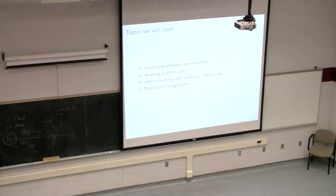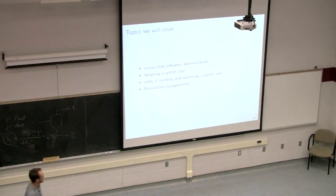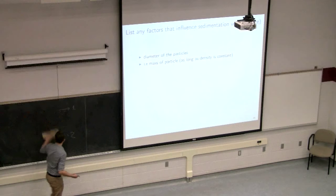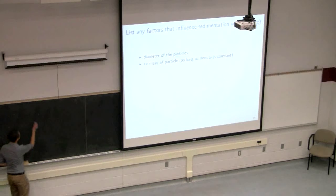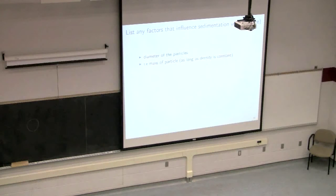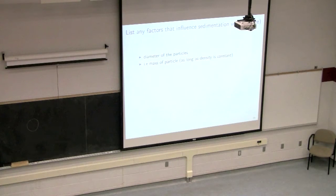In today's class we'll look at how to speed up sedimentation and what factors influence it. Next class we'll cover design, costs, and coagulation. Consider a spherical particle settling — what factors will affect how fast it settles? Think about the diameter of the particles, the mass of the particle, the viscosity of the fluid around it, the roughness of the particle, porosity, and the density of the fluid.